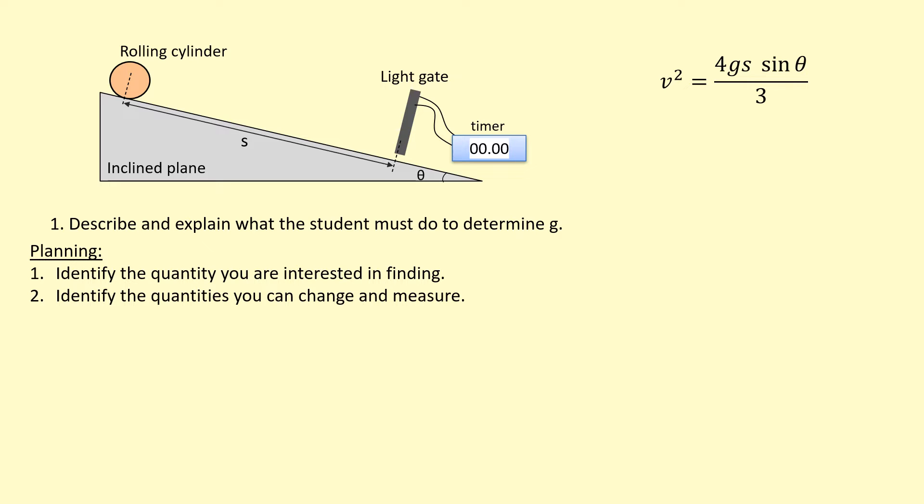The first step is to identify the quantity that we're interested in finding. So we're trying to find G. The next step is to identify the thing that we can change and things that we can measure. In this case, I could change S or I can change theta. I'm going to go for theta, changing the incline of this slope.